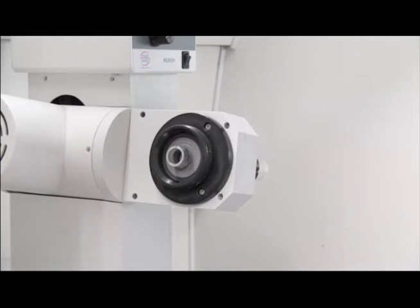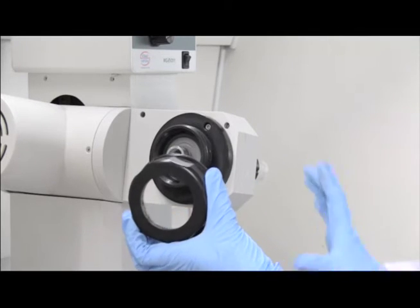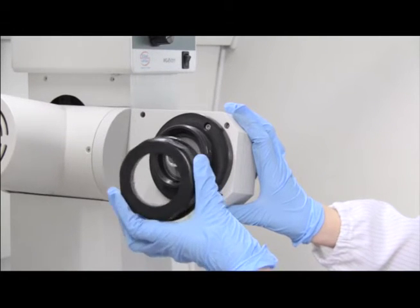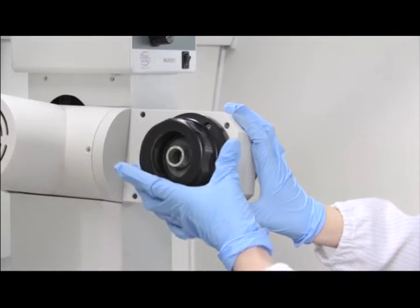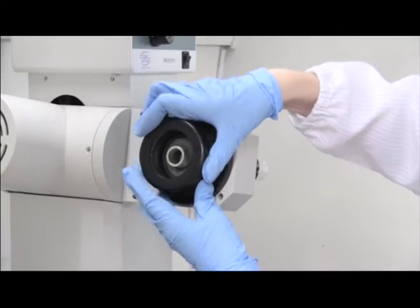Next we install the condenser. First make sure the spring ring has been installed in the union nut, then put the union nut on the screw and rotate it a few times. Do not tighten the union nut.